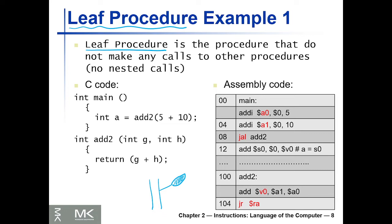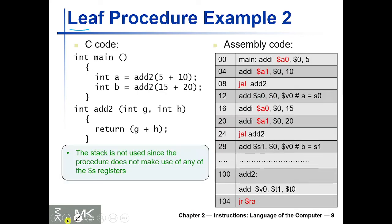We already explored two examples of leaf procedures in last videos. Here is the example that we saw. I changed jump to jump and link and jump return, and also stuck to the convention of using a0 and a1 for the argument and v0 for the return argument. We see another example in which we have two calls to the same function in the main.